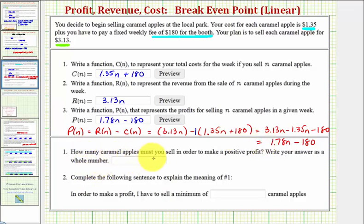Now the next question asks, how many caramel apples must you sell in order to make a positive profit? Write your answer as a whole number. So what this is asking for is what's the smallest number of apples we have to sell in order to make the smallest possible positive profit. So what we'll do is we'll find the value of n where we have zero profit, which is called the break-even point. And then we'll have to round that value up to find the smallest positive profit.